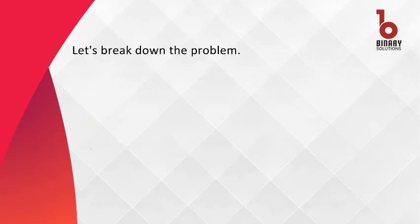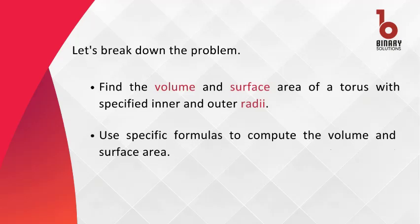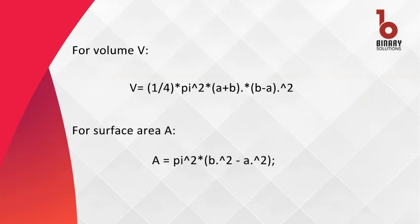Let's break down the problem. We're going to find the volume and surface area of a torus with given inner and outer radii. Here's the mathematical twist: the formulas we'll use — for the volume V and for the surface area A.